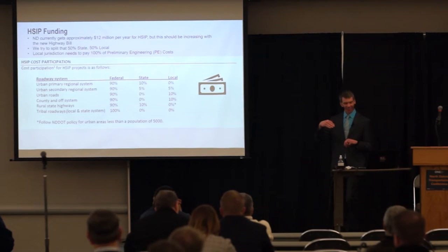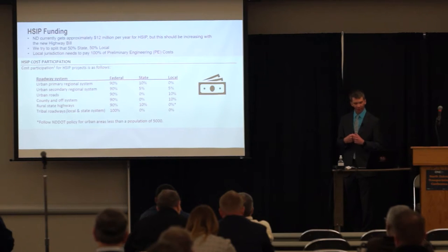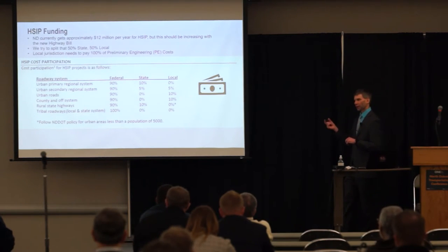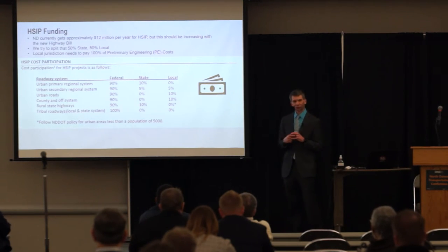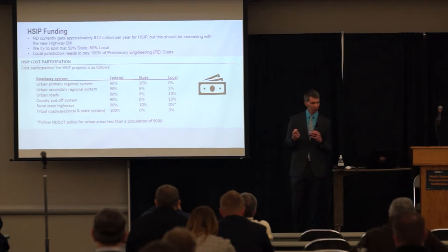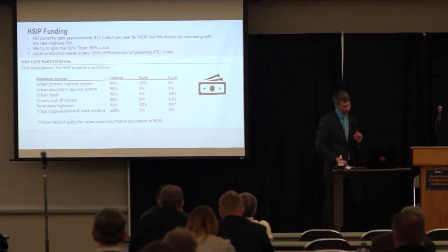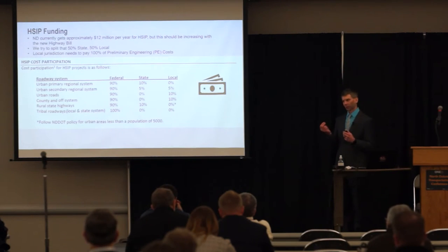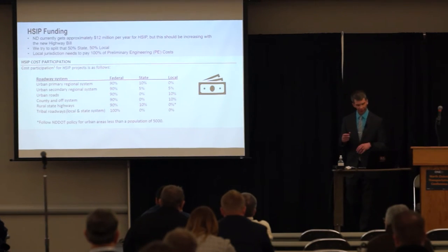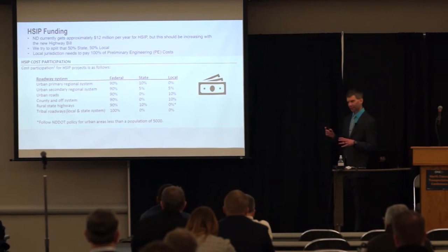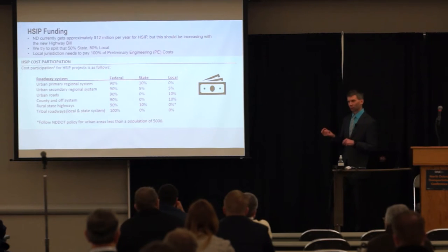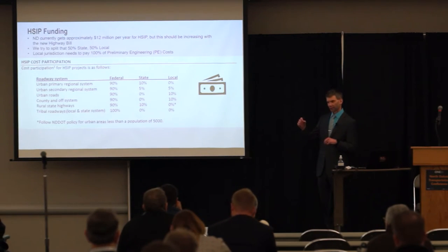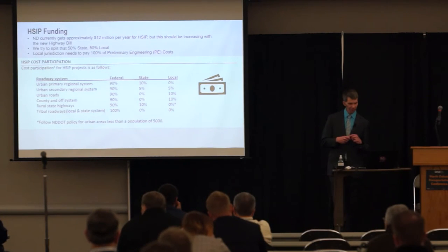We have a list of HSIP cost participation rates. On the federal side, everything is 90% except for the last column — so 90% of your construction costs are covered federally. You can look at the first column and across to see what the state and local percentage would be for that type of project and roadway system. One thing to point out is that for tribal roadways, construction costs are 100% federally funded — they do not have to pay any match.